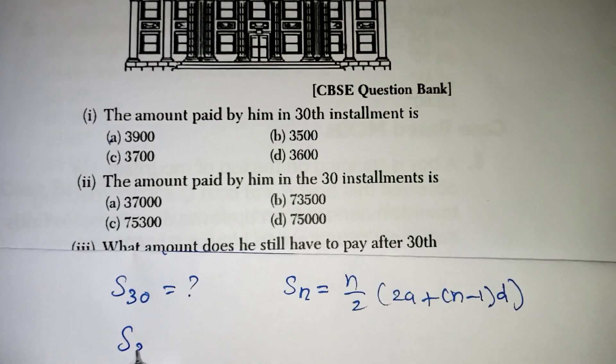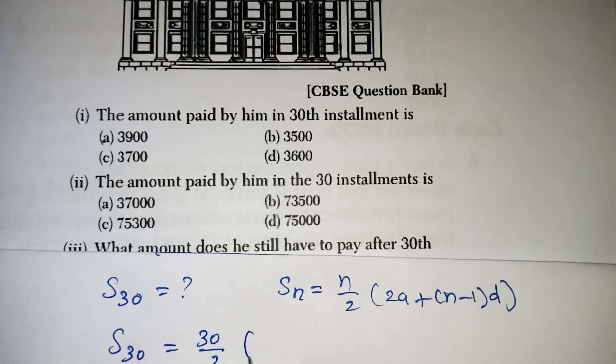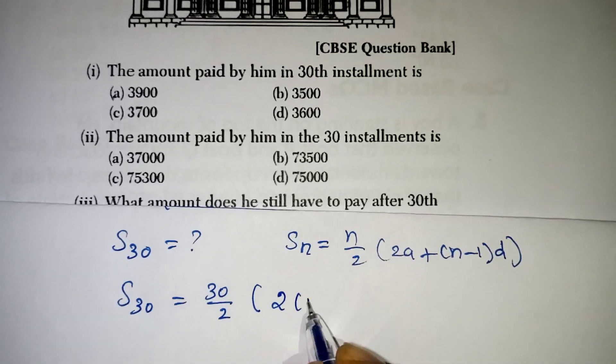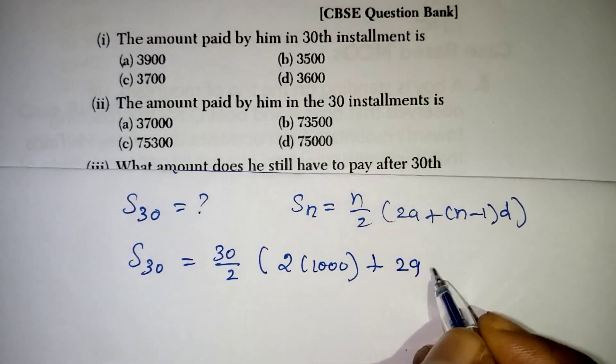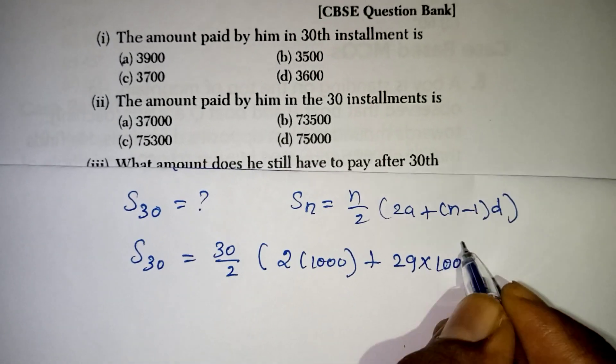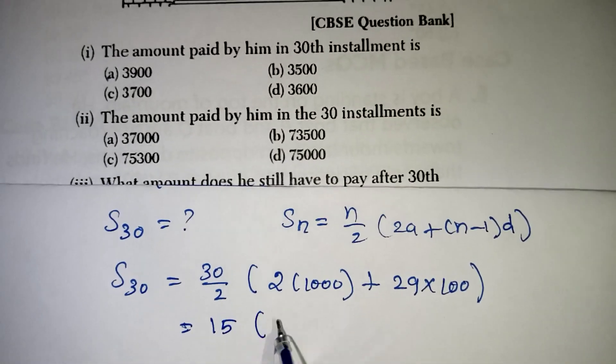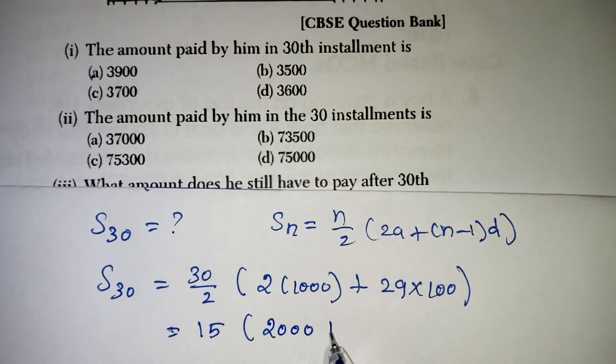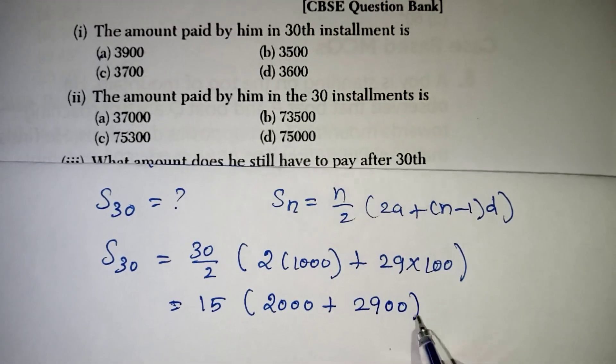Now, here S30. So, wherever N comes we have to substitute with 30. So, N by 2, 30 by 2 which is equal to 2A. 2 into A value 1000 plus N minus 1, 29D value 100. This we should apply. If we cancel, 15. 2 into 1000, 2000 plus 29 into 100 is 2900.